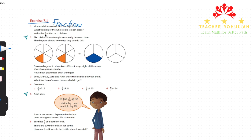The first question in this exercise says Marcus divides a cake into five equal pieces. What fraction of the whole cake is each piece? Write this fraction as a division.